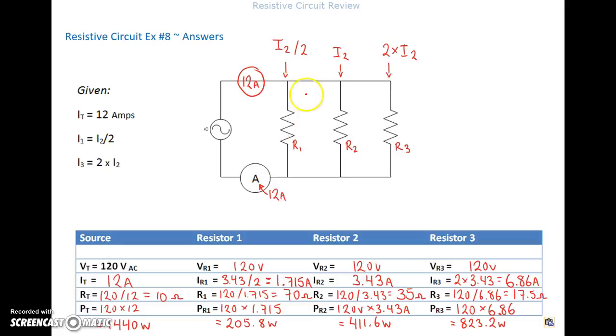The first resistor was half of the second current. So 3.43 divided by 2 gives me 1.715 amps. And 120 volts divided by 1.715 amps gives me 70 ohms. The power value for this guy, 120 times 1.715 amps gives me 205.8 watts.